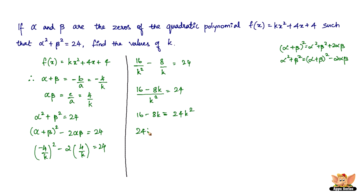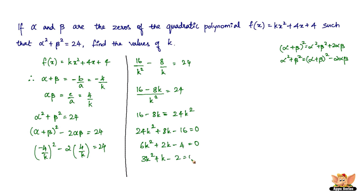Taking LCM on the left side: (16 - 8k) / k² = 24, so 16 - 8k = 24k². Rearranging: 24k² + 8k - 16 = 0. Dividing through by 4: 6k² + 2k - 4 = 0. Dividing again by 2: 3k² + k - 2 = 0. This is a proper quadratic equation we can solve by splitting the middle term.